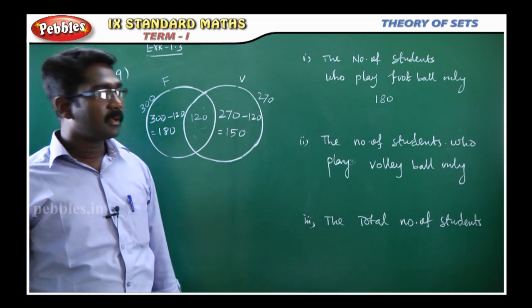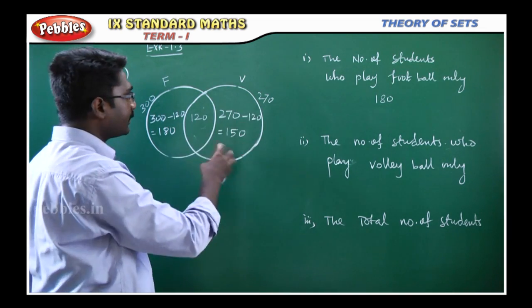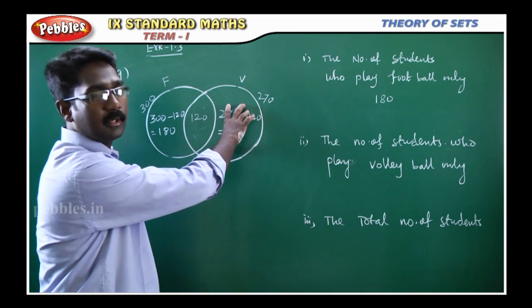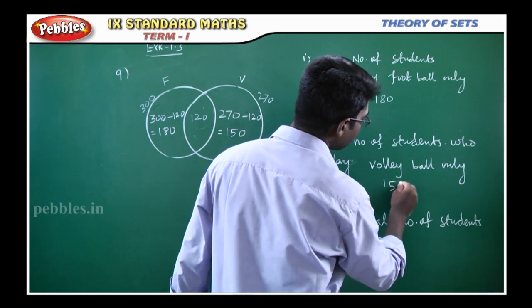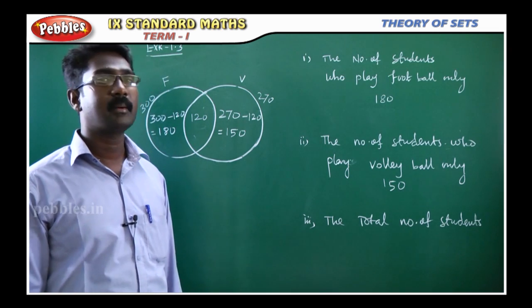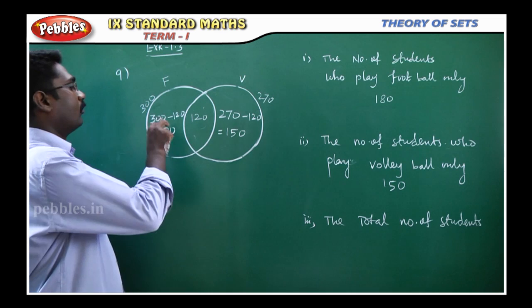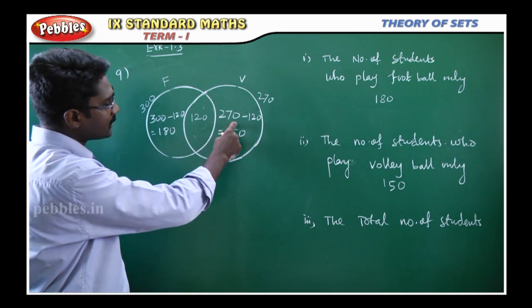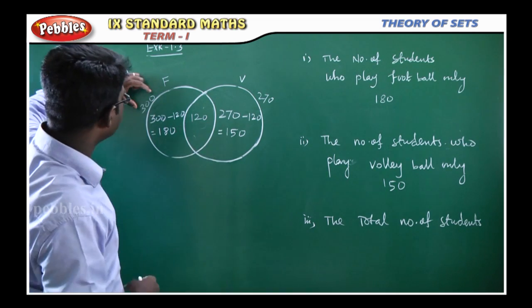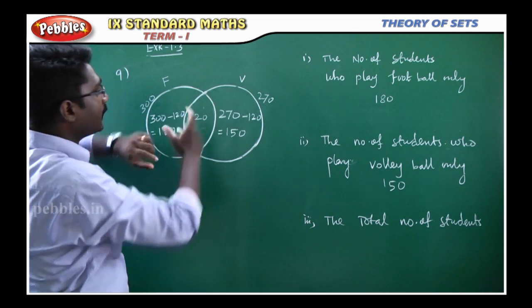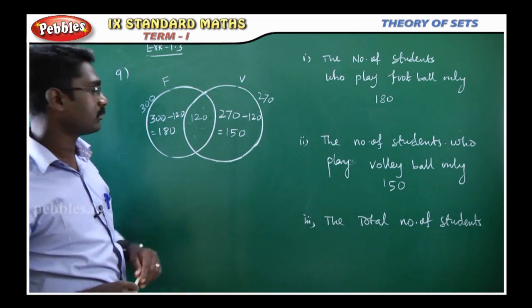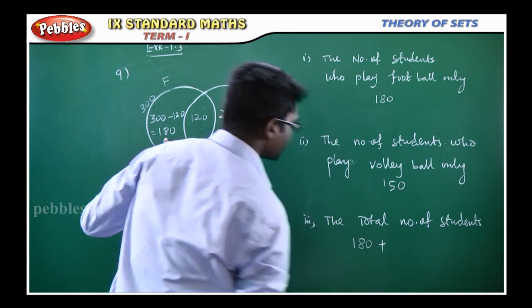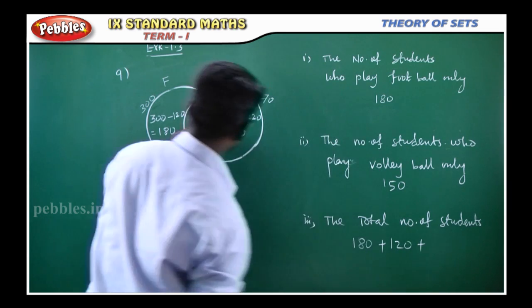Second, the number of students who play volleyball only. If you have the set of volleyball only, you will have 150 students. Last, the total number of students in the school: football only plus both plus volleyball only. We will add these points. 180 plus 120 plus 150 equals 450 students in the school.